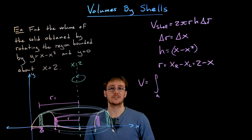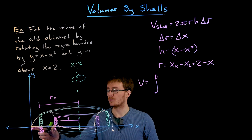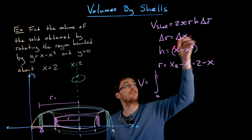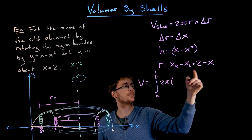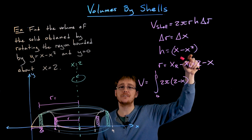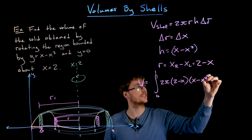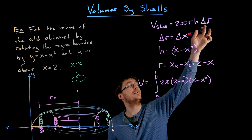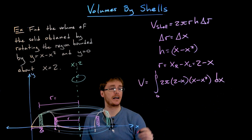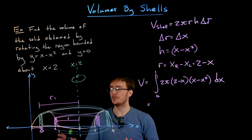Our limits of integration are the x values from our original region: x equals 0 to x equals 1. The integrand is 2π times the radius, which is the quantity (2 minus x), times the height of each shell, the quantity (x minus x squared), times the thickness dx. Taking the limit converts delta x into the differential dx. This definite integral represents the exact volume of our solid of revolution.